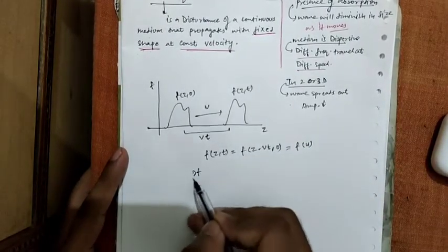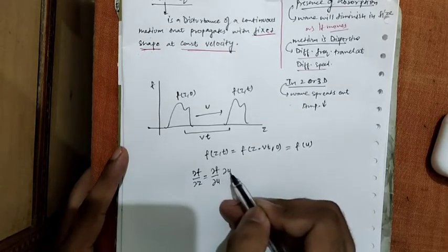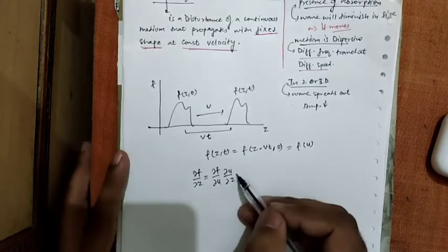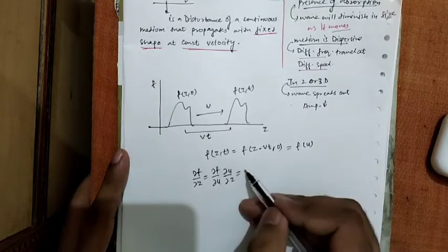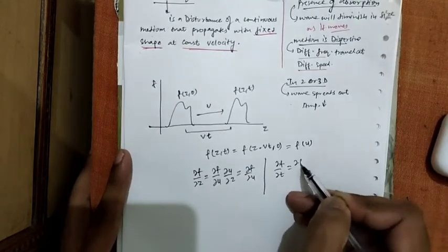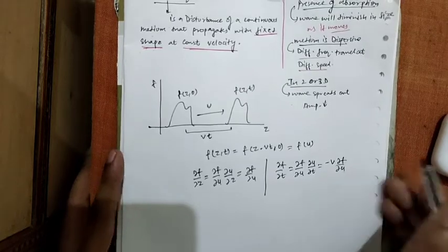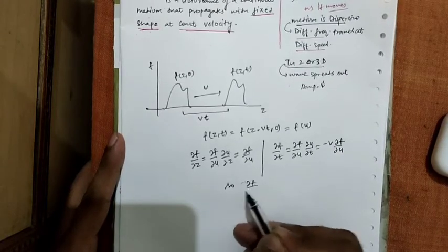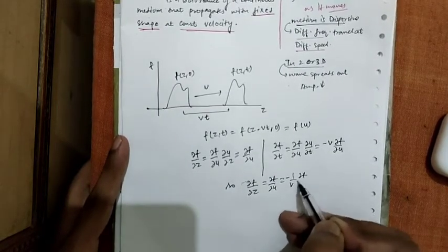Now, differentiating with respect to z, we get ∂f/∂z = (∂f/∂u)(∂u/∂z). Since u = z − vt, ∂u/∂z = 1, so ∂f/∂z = ∂f/∂u. Similarly, ∂f/∂t = (∂f/∂u)(∂u/∂t) = −v · ∂f/∂u. From these two equations, we can see that ∂f/∂z = ∂f/∂u = −(1/v) · ∂f/∂t.